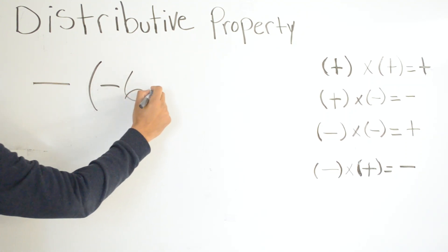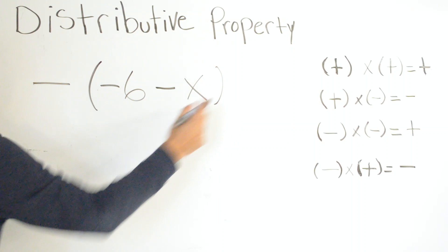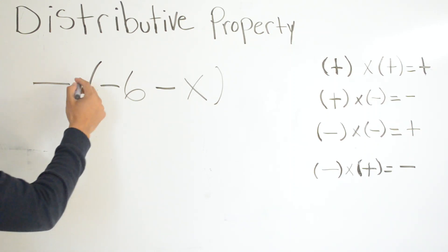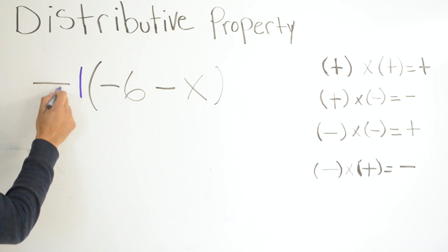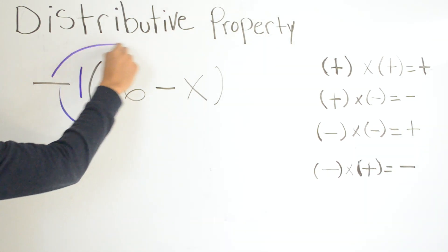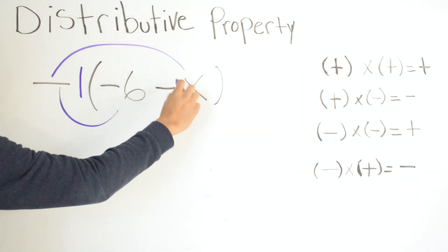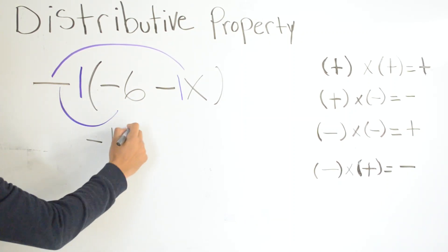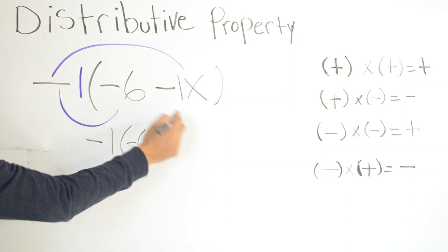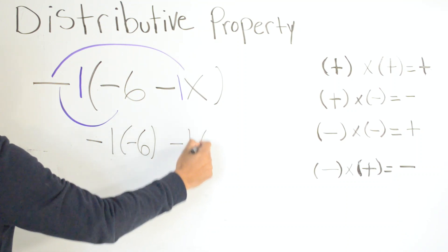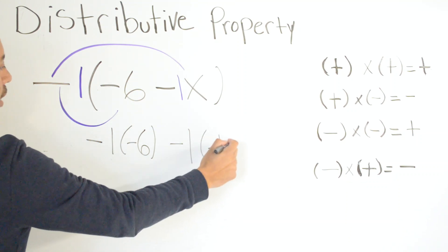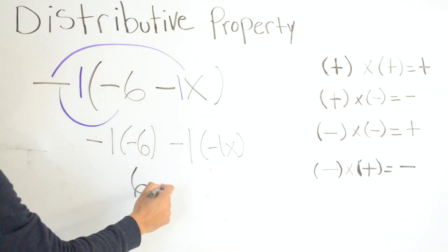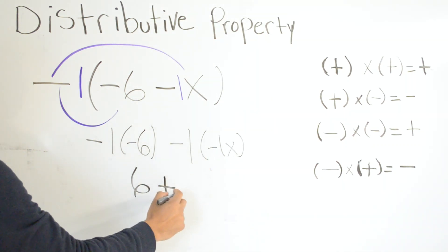Now negative times negative six minus x. Every time you don't have a number, you already know that it has an imaginary one there. So you'll be multiplying negative one times negative six, and negative one times negative x. Negative one times negative six is six. Then a negative times a negative is a positive, and one times one is one x. So your answer is six plus x.